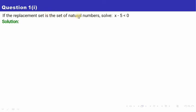The first question says: if the replacement set is the set of natural numbers, solve x minus 5 less than zero. So x minus 5 is less than zero, and we need to solve it given that the replacement set is the set of natural numbers.